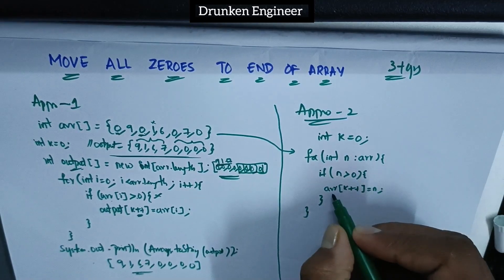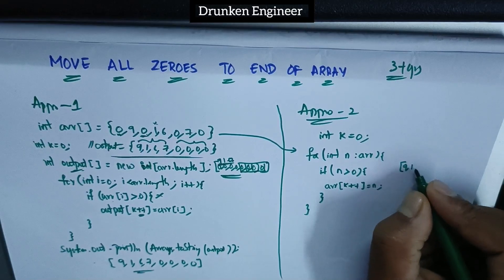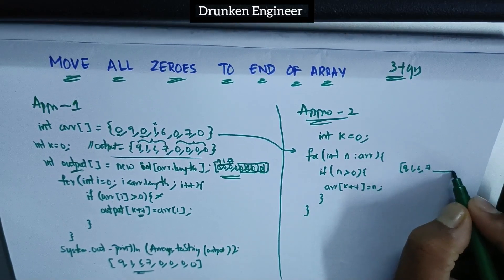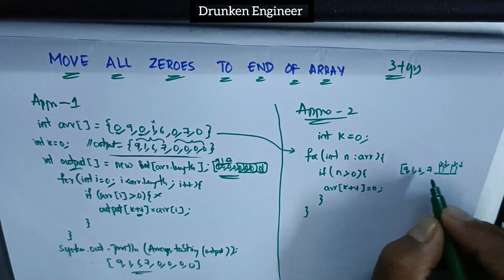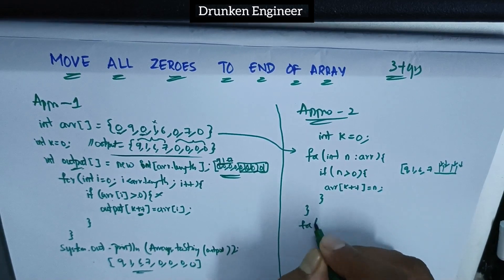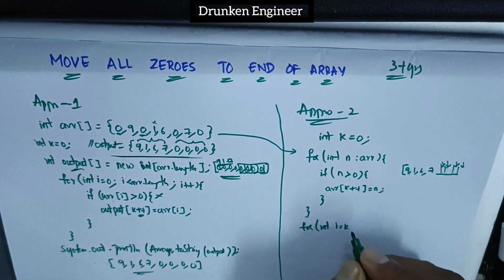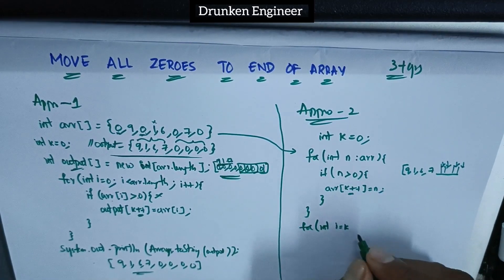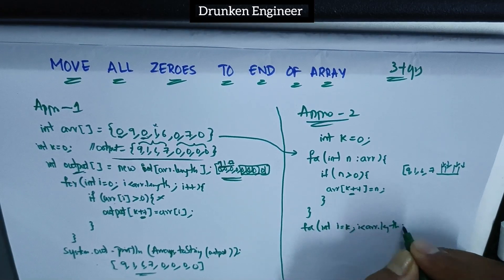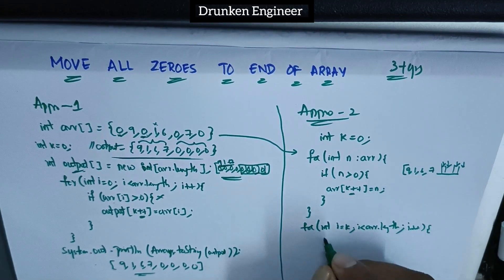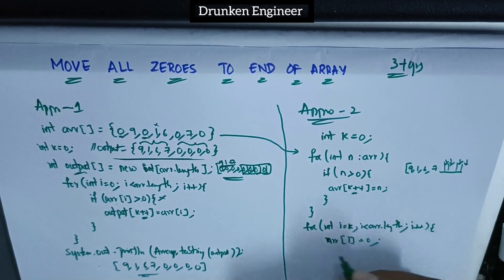All non-zeros get inserted at the beginning like nine, one, six, seven, but still four positions have old values. Here's the trick: int i equals k, i less than array dot length, i plus plus, and at the i-th position I directly insert zero.